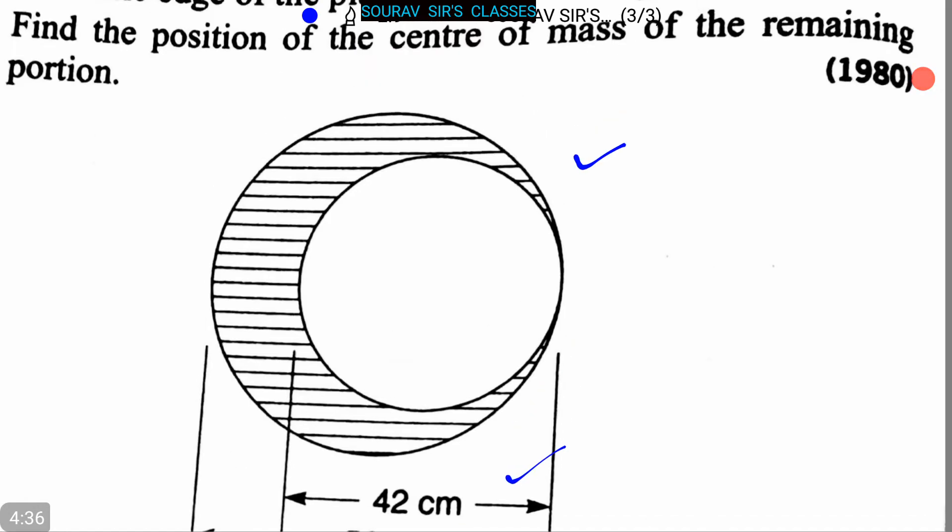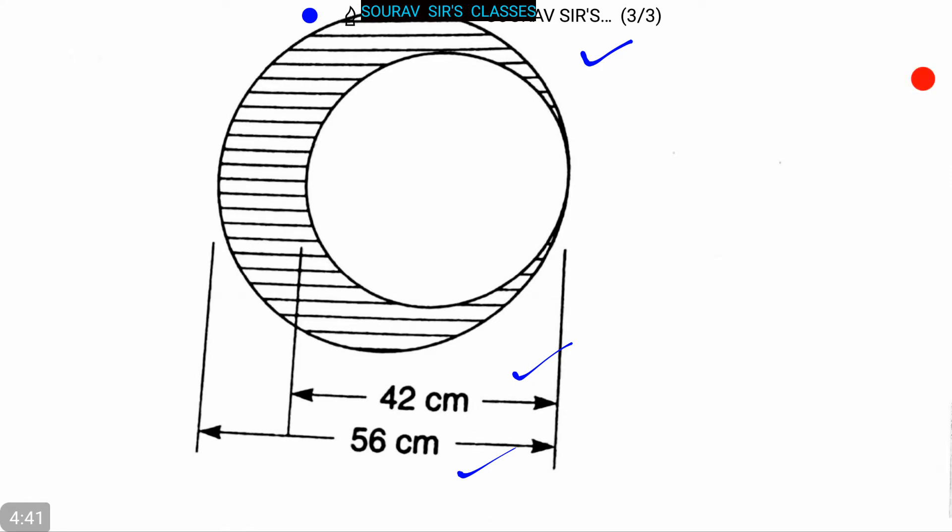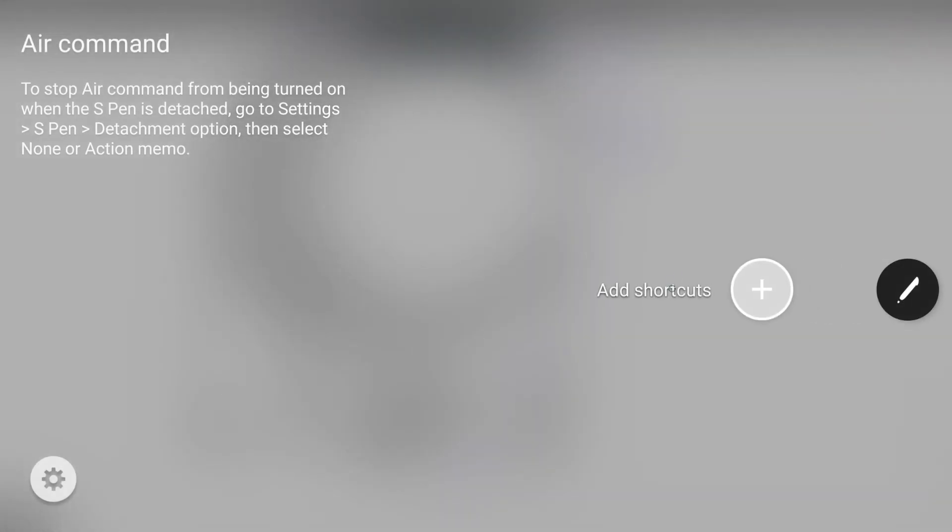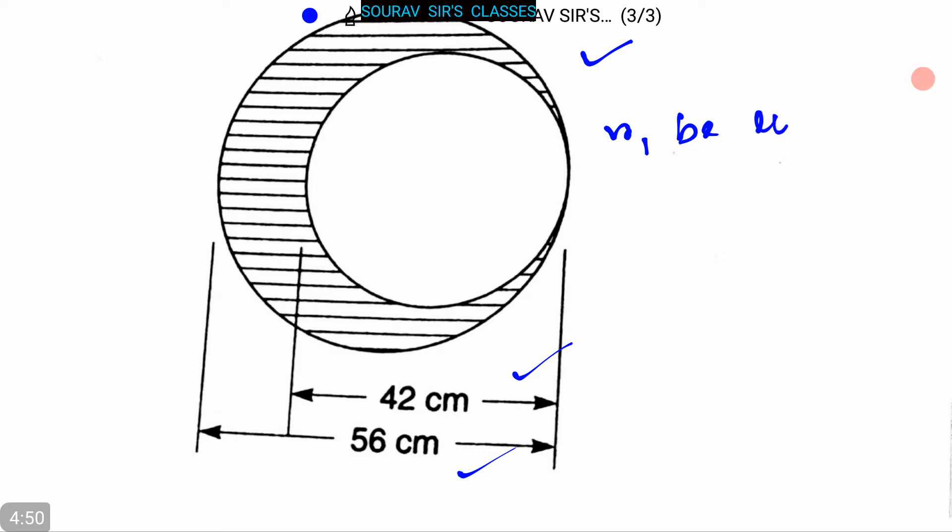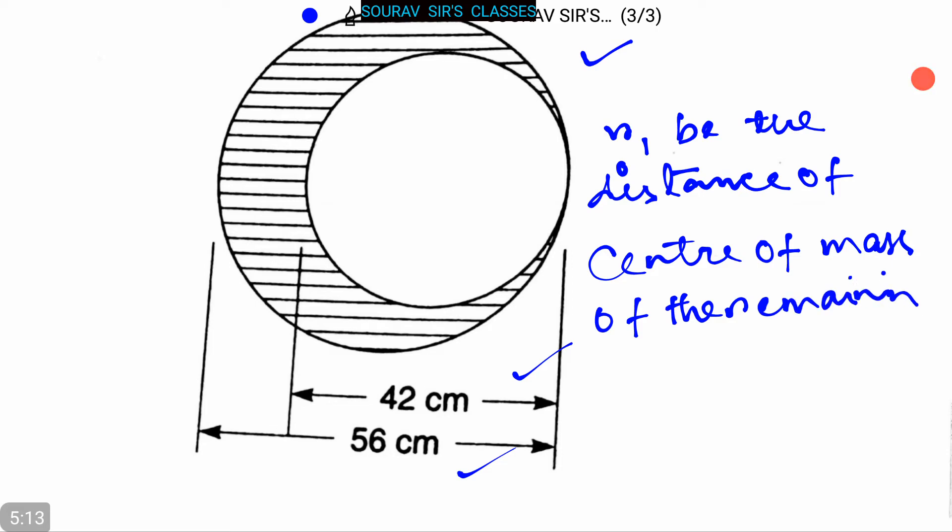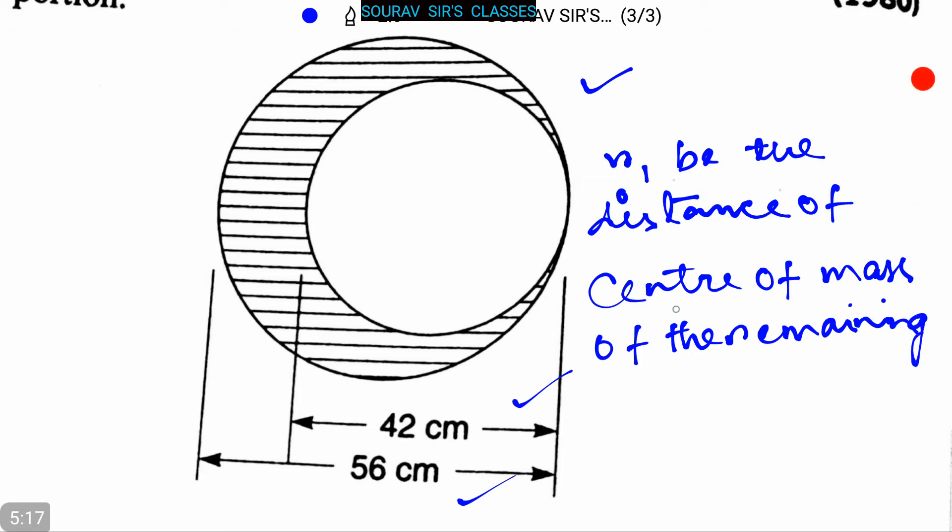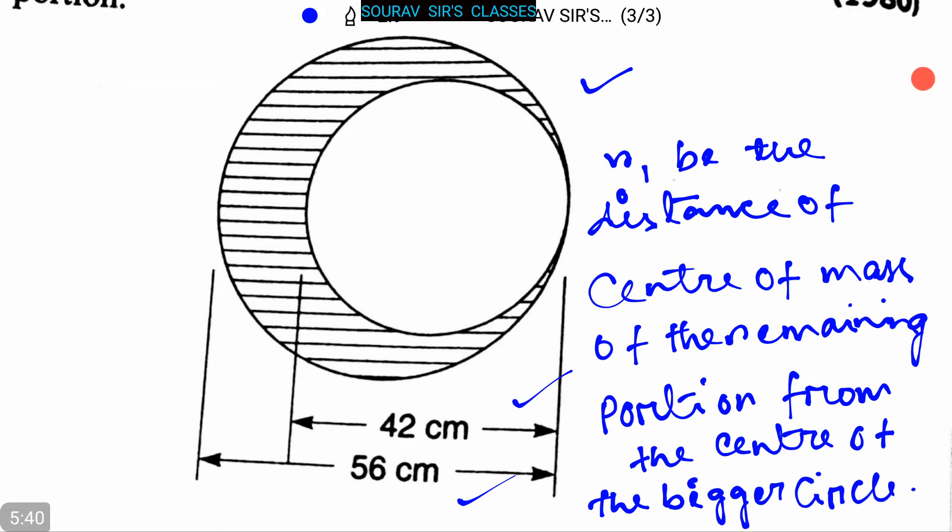Let us assume that r1 be the distance of center of mass of the remaining portion from the center of the bigger circle. In this question we have to find this r1.